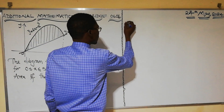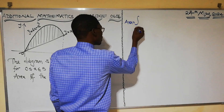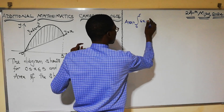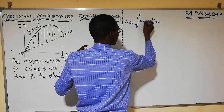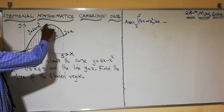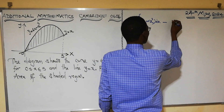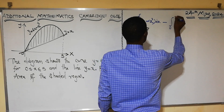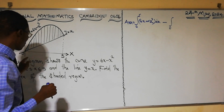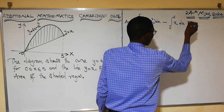In short, the area will be equal to the integral from 0 to 5 of the curve 6x − x² with respect to x, minus the area formed by integrating the line y = x from 0 to 5. So our function for the line is x with respect to x.